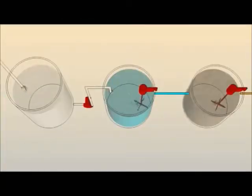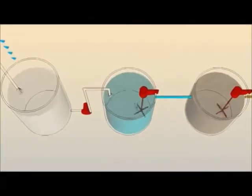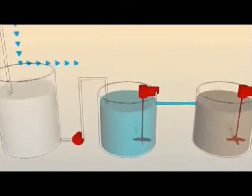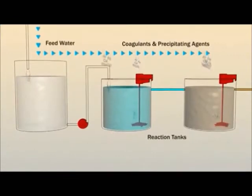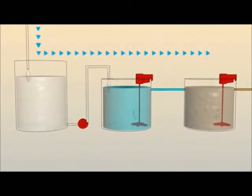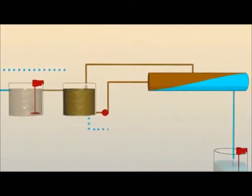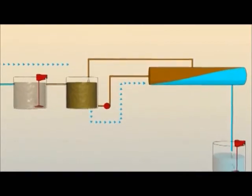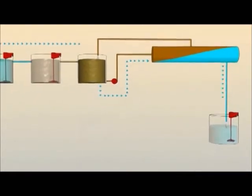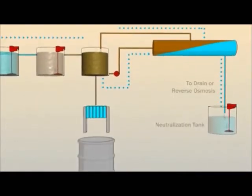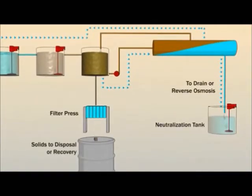In an overall filtration system, the feed water flows to the reaction tanks, where chemistry is added to precipitate contaminants and condition the water for filtration. The water then flows to the feed tank, where it is pumped to the filter modules. Clean water is removed by the filters and the contaminants return to concentrate in the feed tank.